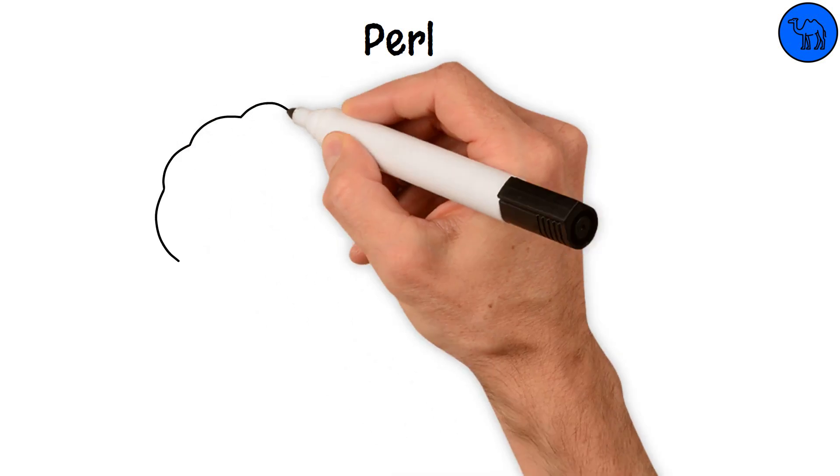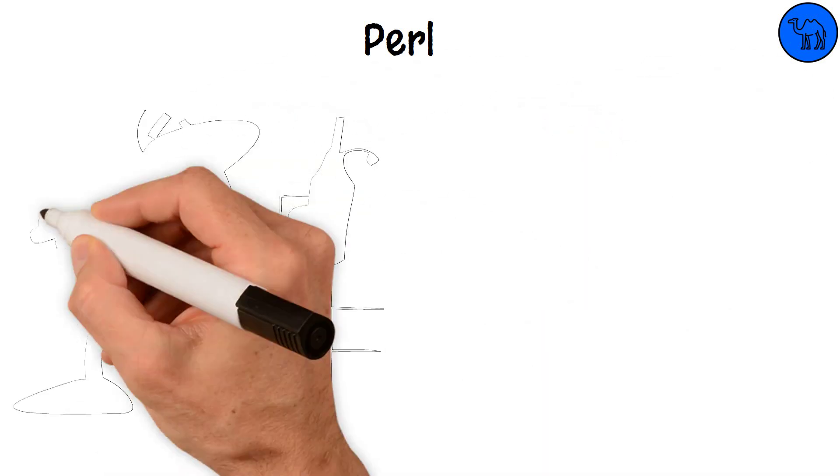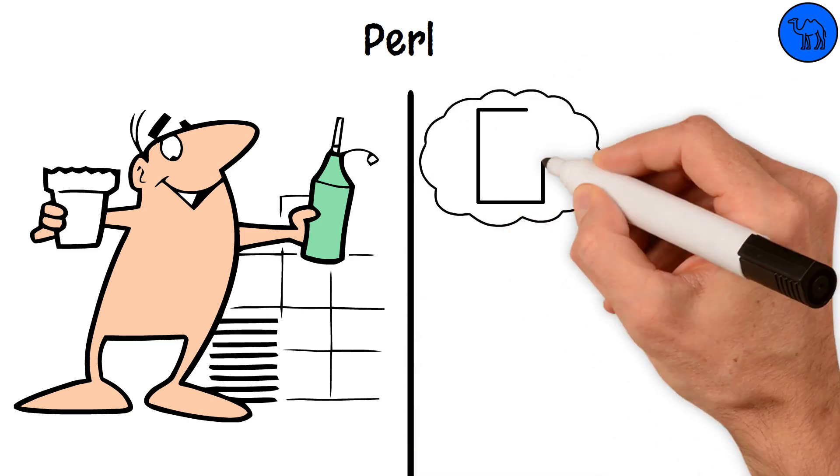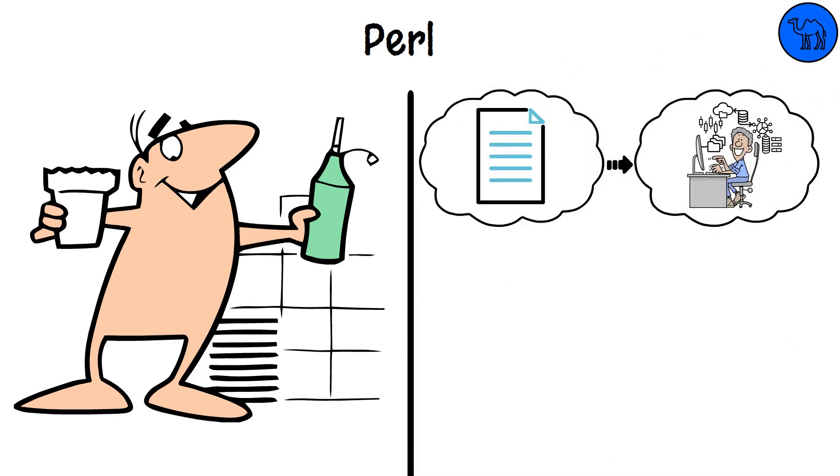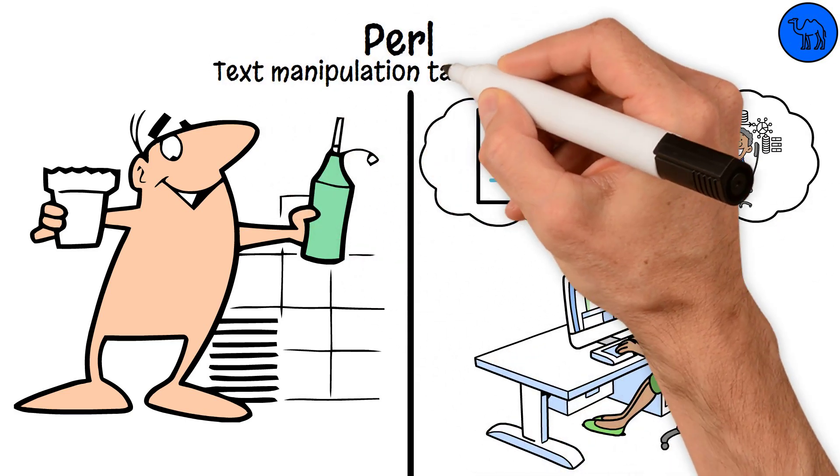Pearl. Picture Pearl as the tape and glue of the performing world. It's great for holding things together and making quick fixes, particularly in text processing and system administration. Pearl's strength lies in its abilities to handle complex data and text manipulation tasks with ease.